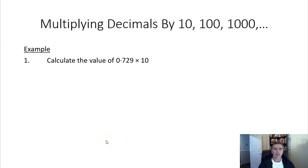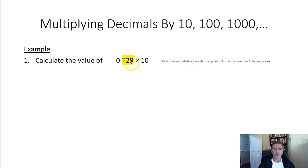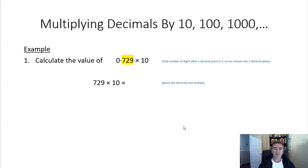So here's an example. We're going to calculate the value of 0.729 times 10, and we're going to do it the longer way. The longer way basically says we've got three numbers in total after a decimal point — there's none after the decimal point in 10, and we've got three here. So if there's three numbers after a decimal point, then our answer should have three decimal places. Now let's ignore the decimal — we've got 729 times 10, and that becomes 7290.